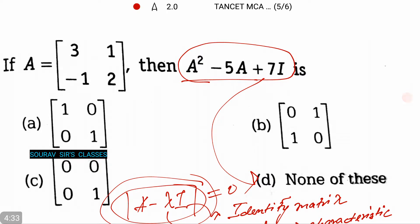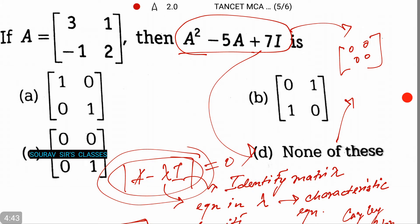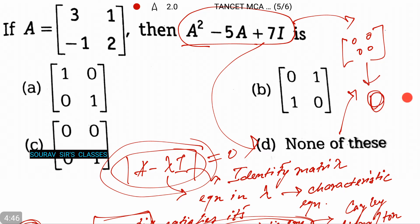Right, none of these, as this should have been [0 0; 0 0], which is the null matrix. All right.